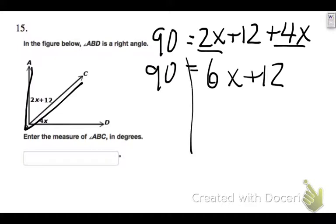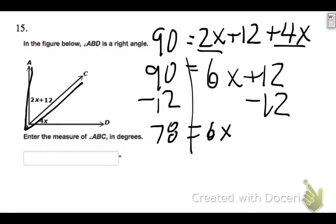To start solving, I'm going to subtract 12 on both sides and I'm going to get 78 equals 6x. I'm going to divide both sides by 6, and I'm going to get x is 13.